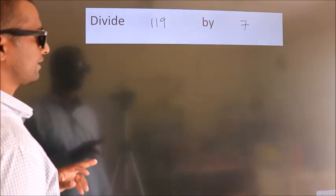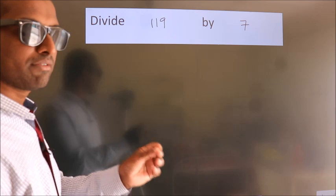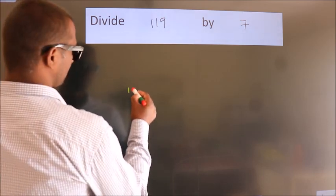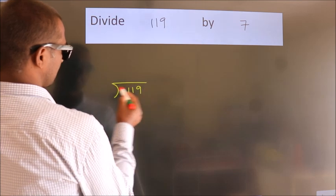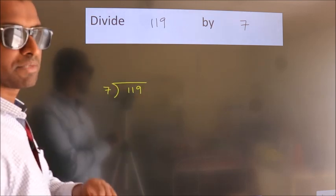Divide 119 by 7. To do this division we should frame it in this way. 119 here, 7 here. This is your step 1.